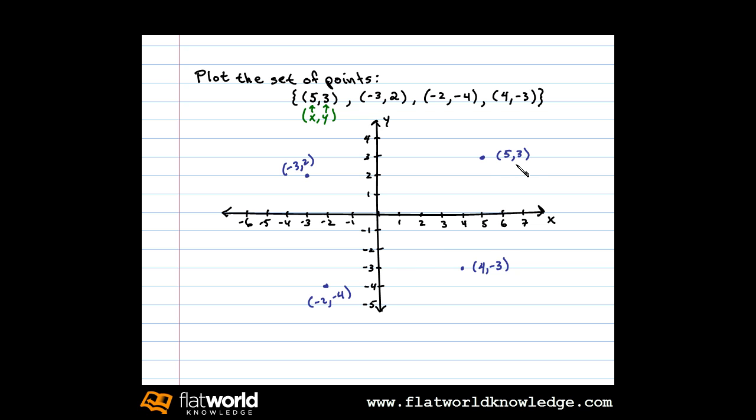The point here, five comma three, is in quadrant one. The point negative three, two is in quadrant two.